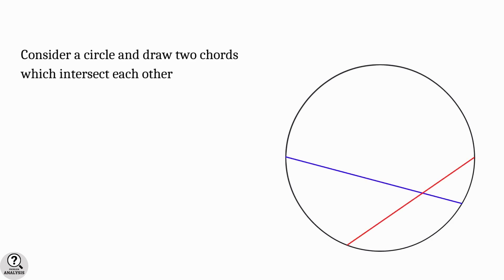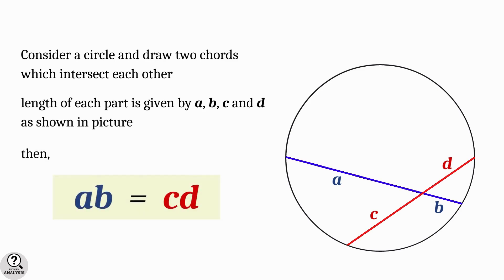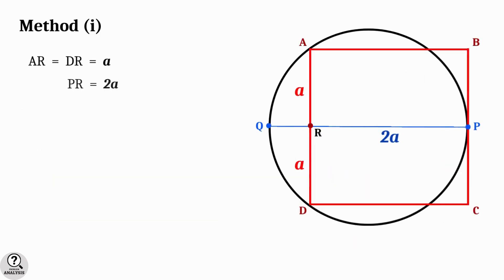Consider a circle and draw two chords which intersect each other. Length of each part is given by a, b, c, and d as shown in the picture. Then the theorem says the product of a and b is equal to the product of c and d.